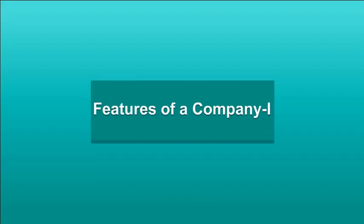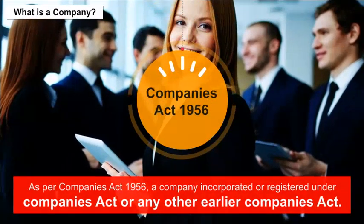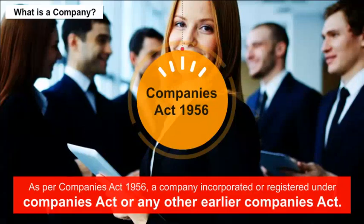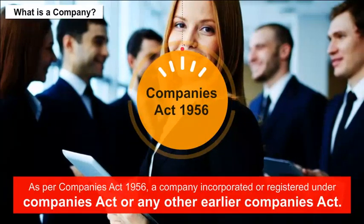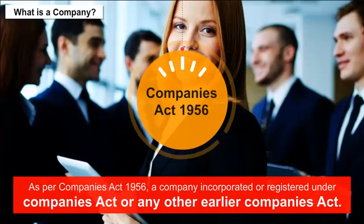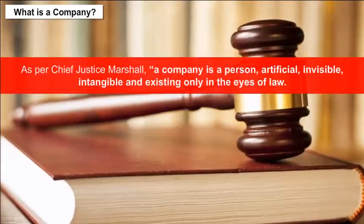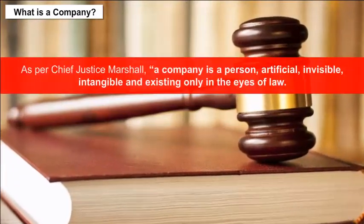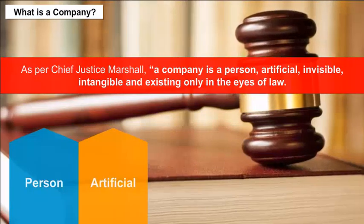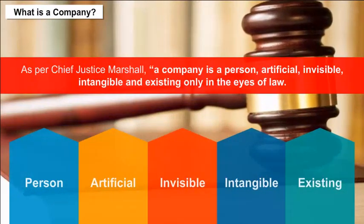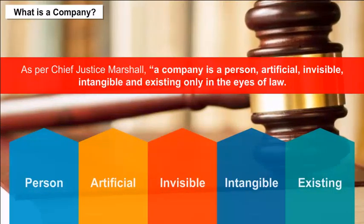Features of a Company: What is a company? As per the Companies Act 1956, a company is incorporated or registered under the Companies Act or any earlier Companies Act. As per Chief Justice Marshal, a company is a person — artificial, invisible, intangible and existing only in the eyes of law.